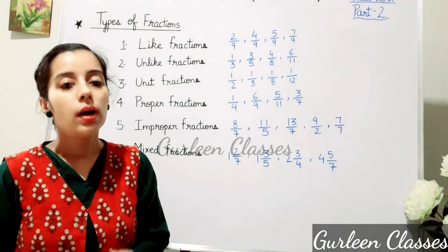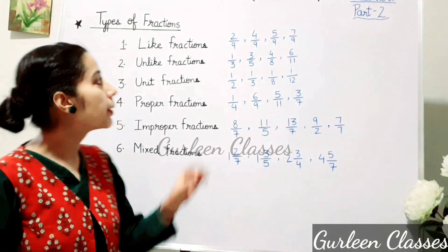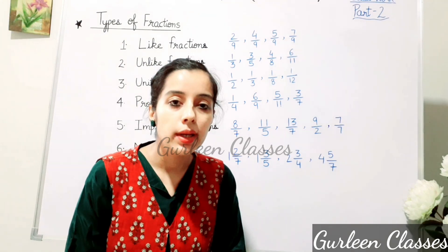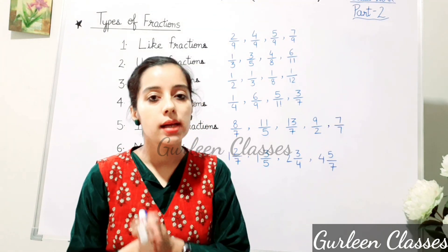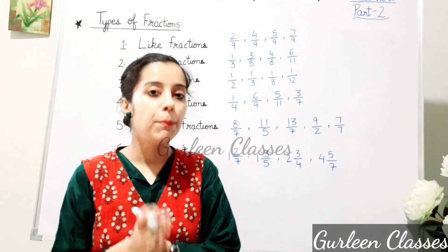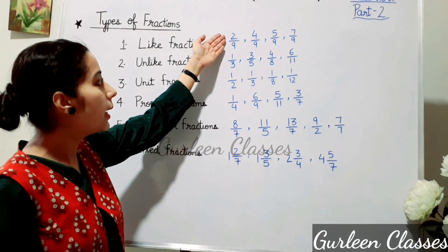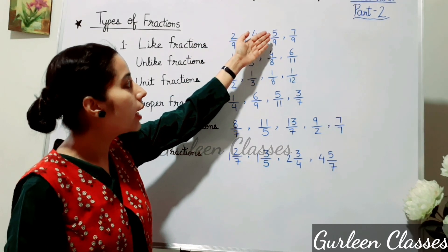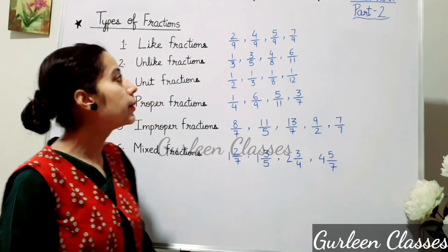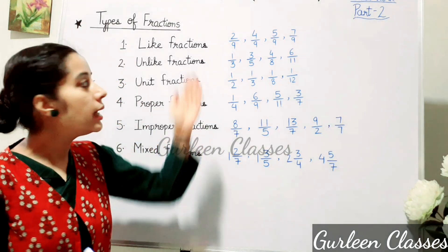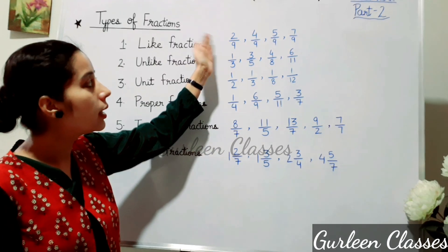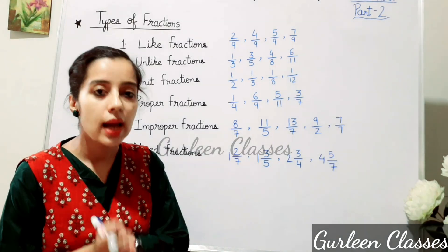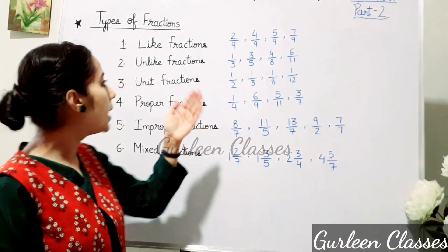Like fractions are those where the denominators are the same. For example: 2/9, 4/9, 5/9, and 7/9. Here you can see 9 is the same denominator, so they are known as like fractions.